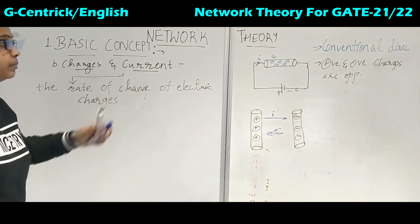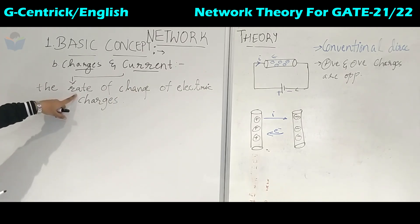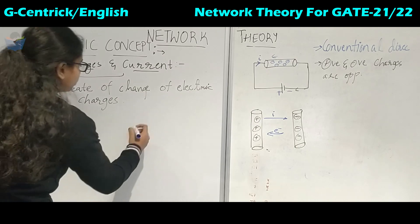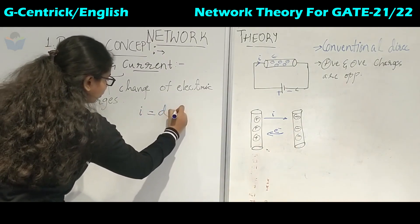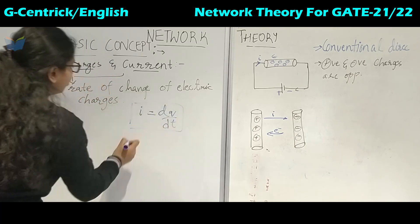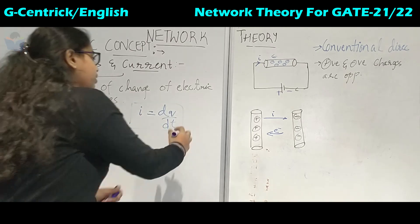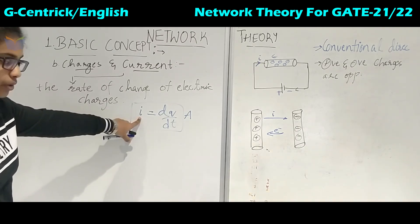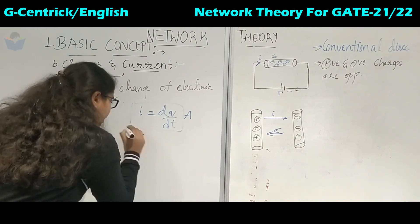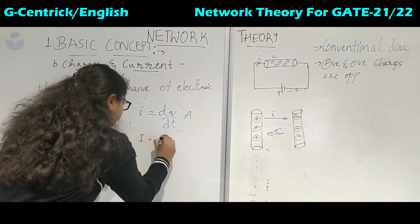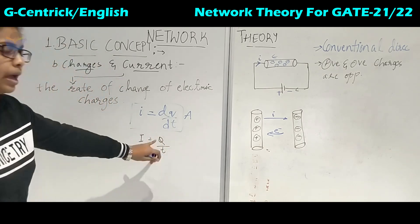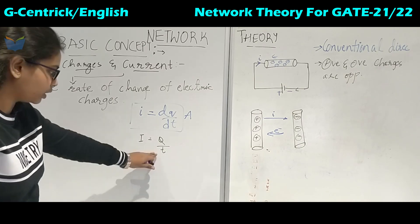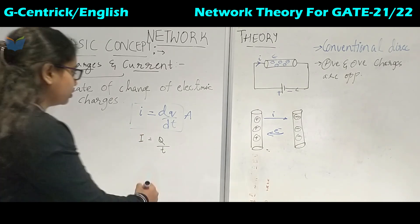That is the definition of current. Whenever the term 'rate' comes, it means the quantity is varying with respect to time. So this current can be written as dQ/dt. This is the formula for electric current and its unit is amperes, represented by A. This represents the instantaneous value of current. If you represent it by capital I and capital Q over t, then this represents the absolute values.